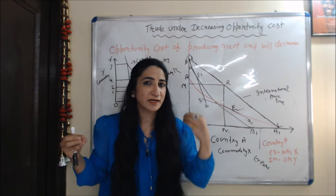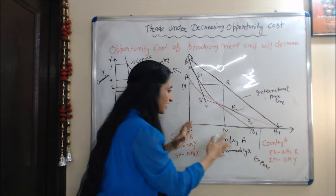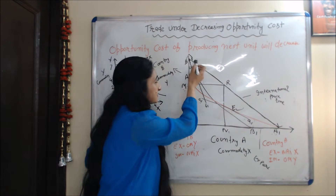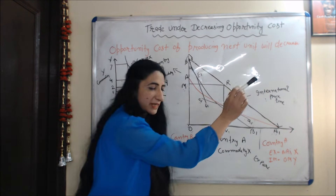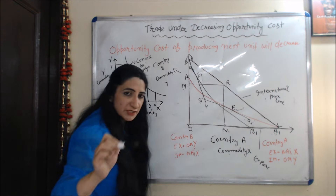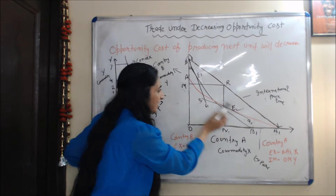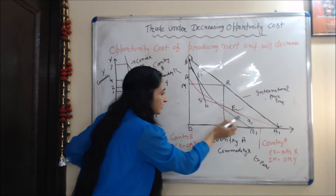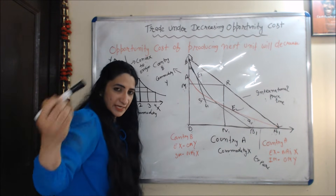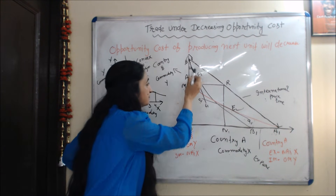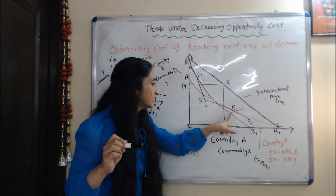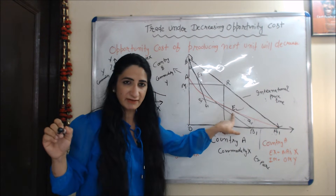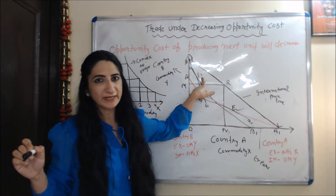Now we talk about trade under decreasing opportunity cost. In this diagram, we have two countries, Country A and Country B, producing only two commodities, X and Y. PL is the international price line. The black curve BB1 is the production possibility curve of Country B, and the red curve AA1 is the production possibility curve of Country A. B1B1 is the domestic price line of Country B and A1A1 is the domestic price line of Country A. Before trade, Country A has equilibrium point at E and Country B has equilibrium point at E1.